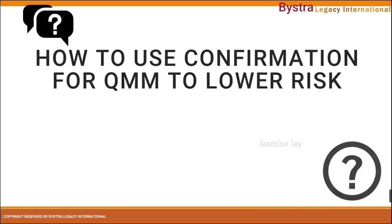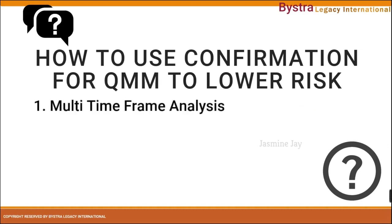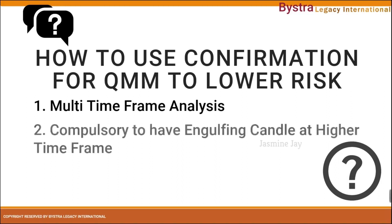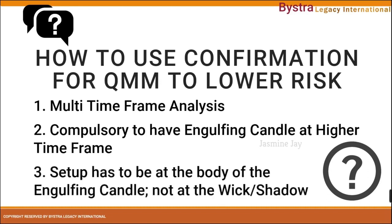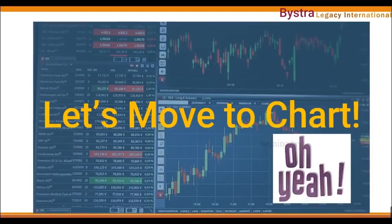So how do we use confirmation for QM to lower the risk of entry? The key, as always, is multi-time frame analysis. It is compulsory to have an engulfing candle on the higher time frame. And the setup has to be at the body of the engulfing candle — never at the shadow or weak area of the engulfing candle, as those are considered very high risk. Let's move to the chart and I'll show you some setups with good confirmation.